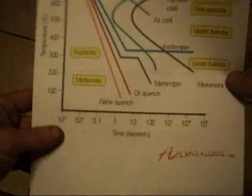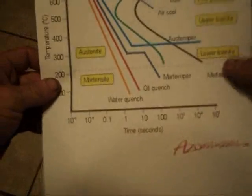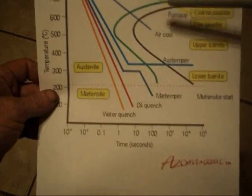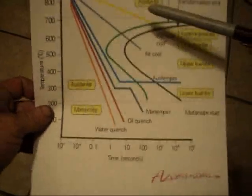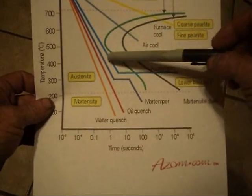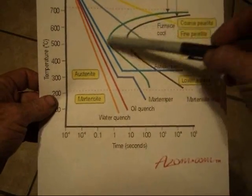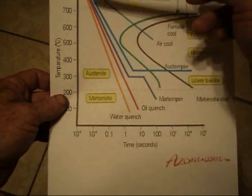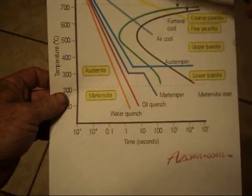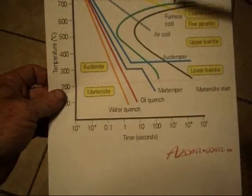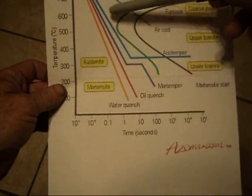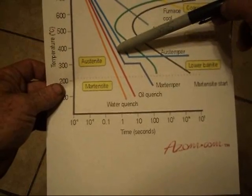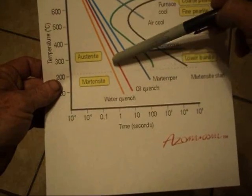But any steel that you heat treat, you can get this chart for. And what's important is, you see this nose right here? This is usually called the pearlite nose. If you quench the steel from the austenization temperature in the time requirement to miss the nose of this curve, then martensite will form.